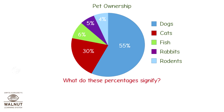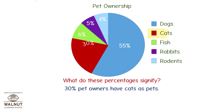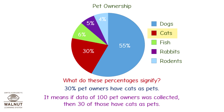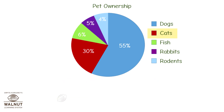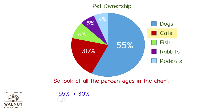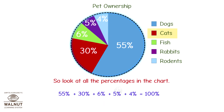What do these percentages signify? 30% of pet owners have cats as pets. It means if data of 100 pet owners was collected, then 30 of those have cats as pets. Look at all the percentages in the chart: 55% plus 30% plus 6% plus 5% plus 4% is equal to 100%. When we add up all the percentages, it has to be 100% — that is a full circle.